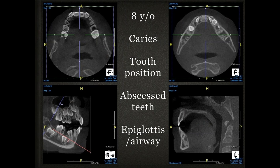As a general dentist I don't see a lot of children, but here's an eight-year-old who came into my office. I noted caries, tooth position discrepancies, and abscessed teeth. I was also able to look at his epiglottis and airway — all from one picture that showed me more diagnostically than a full mouth series would have. I could show the parents how teeth are developing in the jaws, what it means to lose a primary tooth early, and how space can collapse. This becomes very useful for educating parents and getting the child to proper treatment.